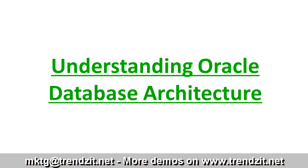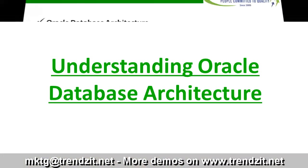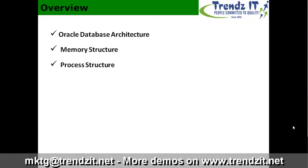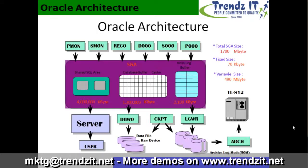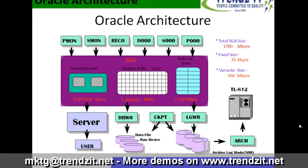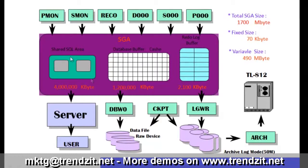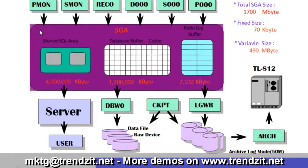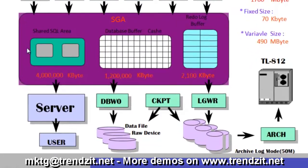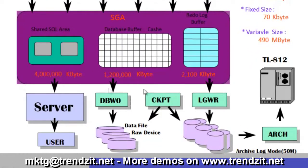Over here we are going to understand about the Oracle Database Architecture. In Oracle Database Architecture, along with that we also need to understand about the memory structure as well as the process structure. An Oracle instance is the area in the RAM occupied by Oracle, called as an instance.